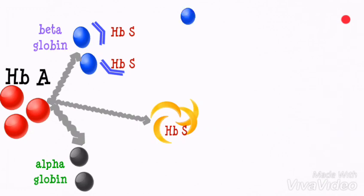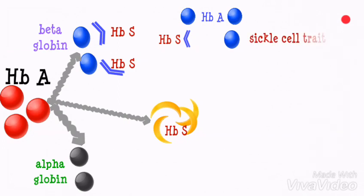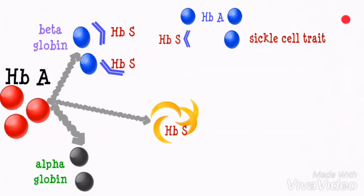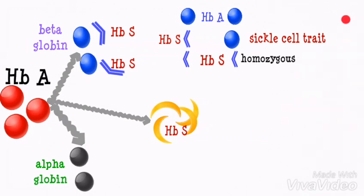If a person has just one copy of the mutation and one normal beta globin molecule, then the person is said to be a sickle cell carrier, also called sickle cell trait or heterozygous, because the red blood cells contain both HbA, which is the normal beta globin molecule, and HbS, which is the abnormal one. If all beta globin molecules are affected, then the person is said to be homozygous and has sickle cell disease, because all beta globin molecules are abnormal HbS.